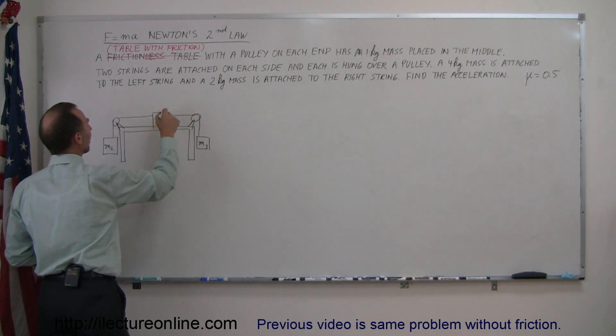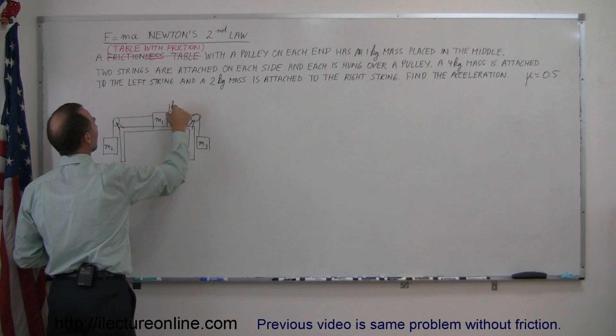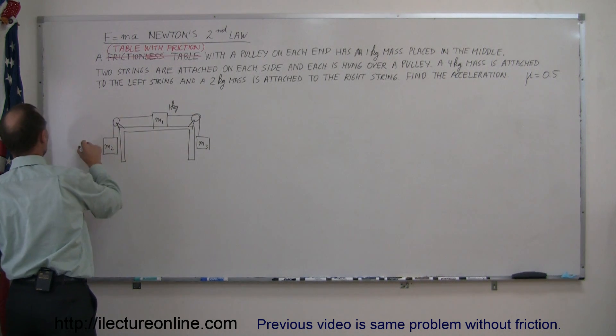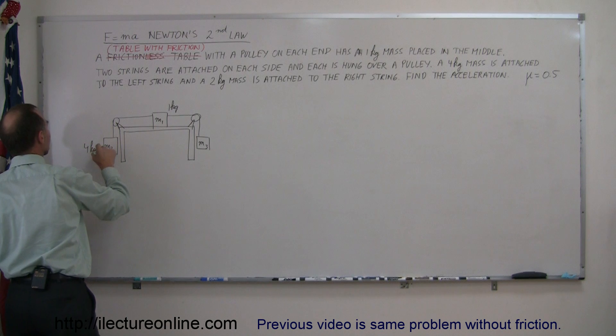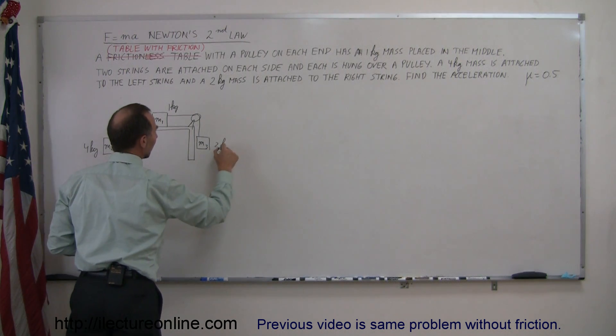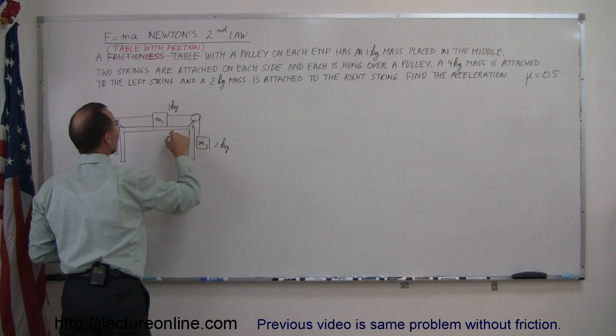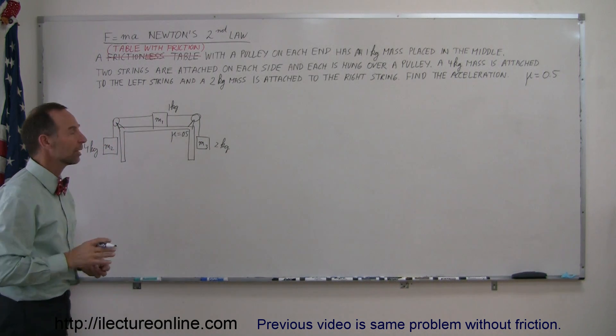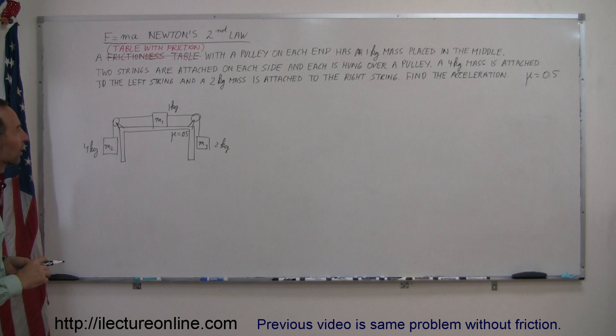M1 is equal to one kilogram. M2 on the left side equals four kilograms, and the mass on the right side equals two kilograms. Now realize there's friction μ equals 0.5. μ is the symbol we use for the coefficient of friction. How will that affect the problem?